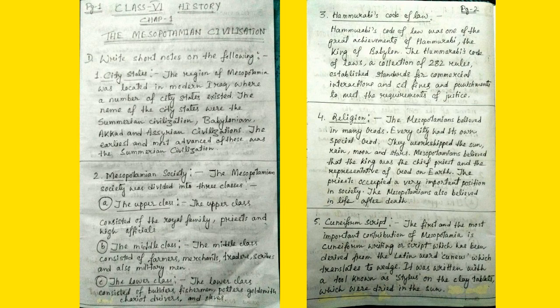Short notes on the following. Number 1: City States. The region of Mesopotamia was located in modern Iraq where a number of city states existed. The names of the city states were the Sumerian civilization, Babylonian, Akkad and Assyrian civilizations. The earliest and most advanced of these was the Sumerian civilization.